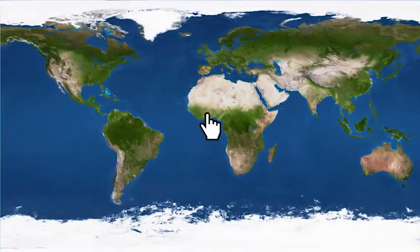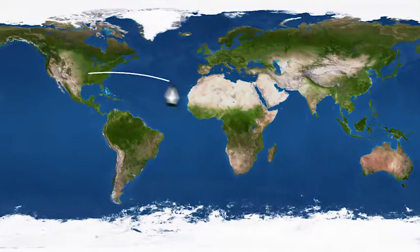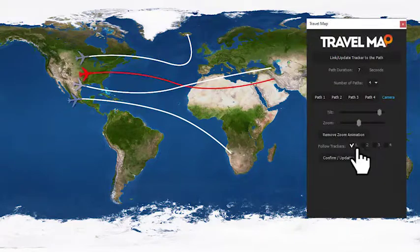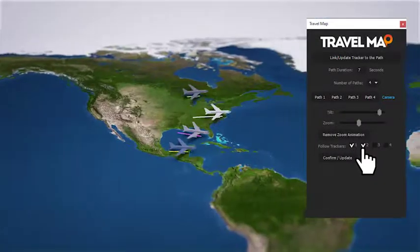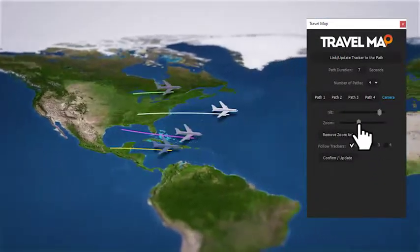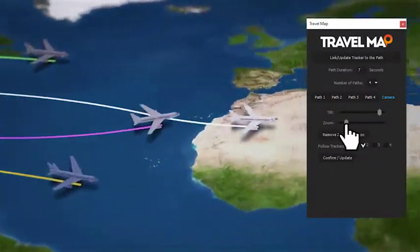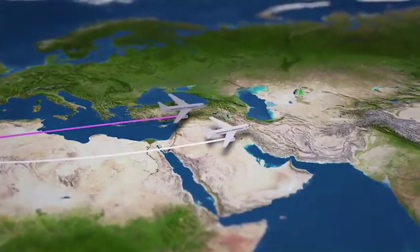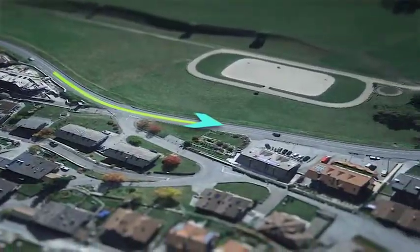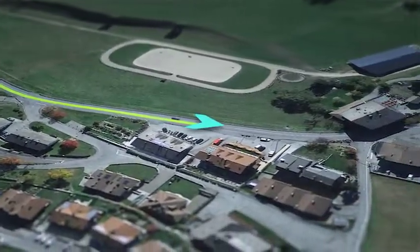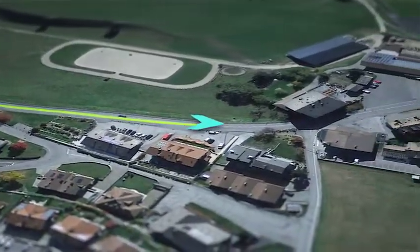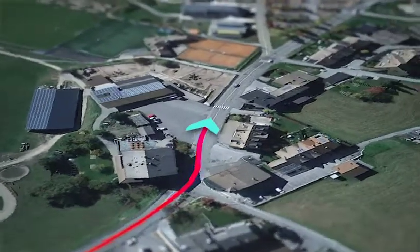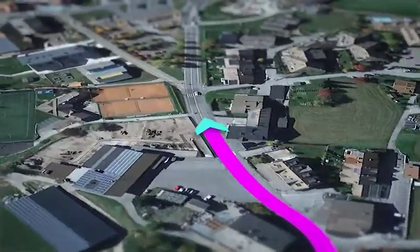Travel Map is very easy to customize. Just draw your paths and set their duration. Choose which trackers you want to follow and the script will create the camera animation. You can also select two different animation modes: follow trackers or rotate around trackers. Adjust the style of your path by setting its color, thickness, and style, and finally add your pins.